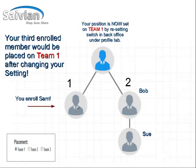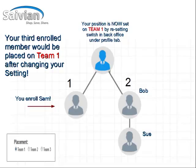Now, to get your third person on board and become a founder, you're going to switch your position to Team 1. That means the placement setting will go to Team 1, and the next person you enroll, Sam, will come down under Team 1. So now you've got your two on the right side and one on the left. If you keep it on Team 1, your next members will come down this leg as well.